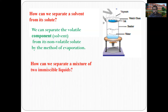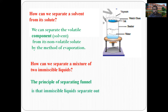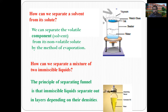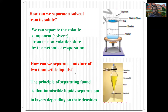How can we separate a mixture of two immiscible liquids? By using the principle of the separating funnel, immiscible liquids separate out. The immiscible liquids in the separating funnel form different layers based on their relative densities. The principle is that immiscible liquids separate out in layers depending on their densities, and easy separation takes place using the separating funnel.